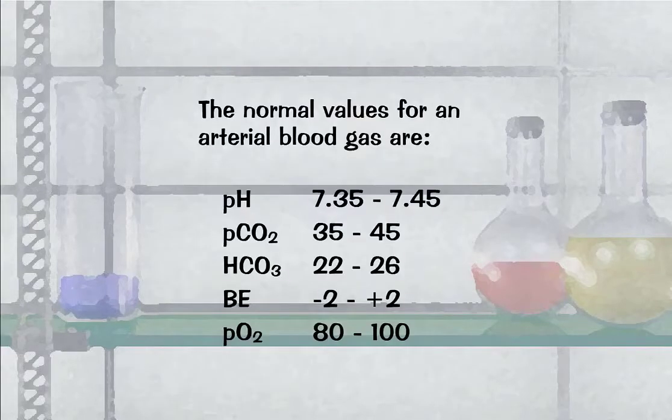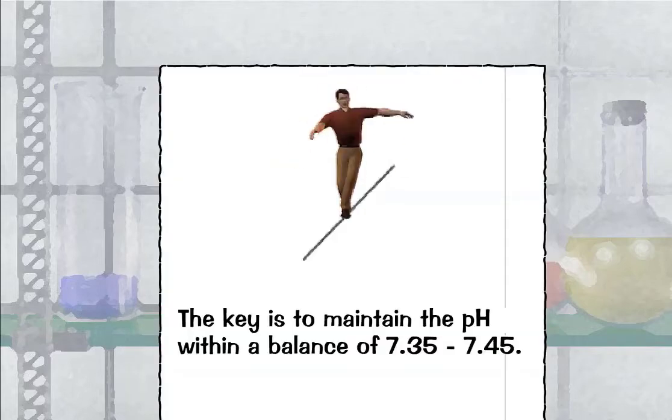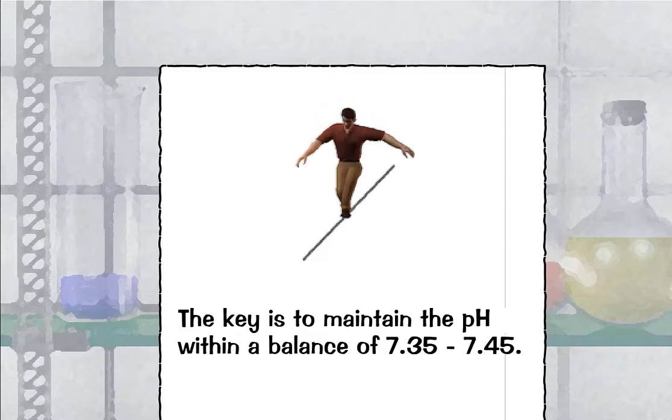The normal values for an arterial blood gas are shown below. The key is to maintain the pH within a balance of 7.35 to 7.45.